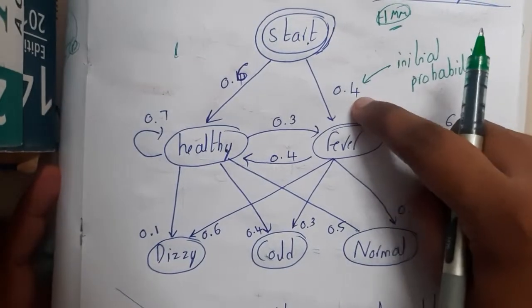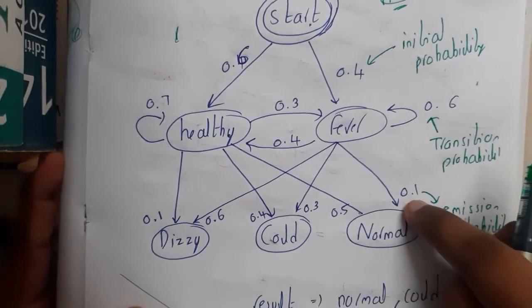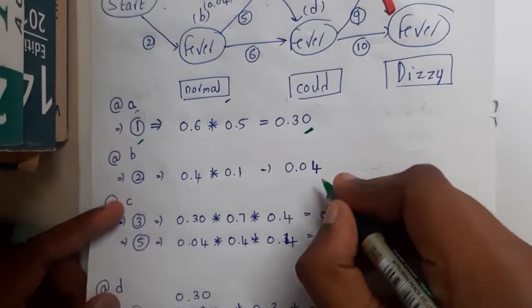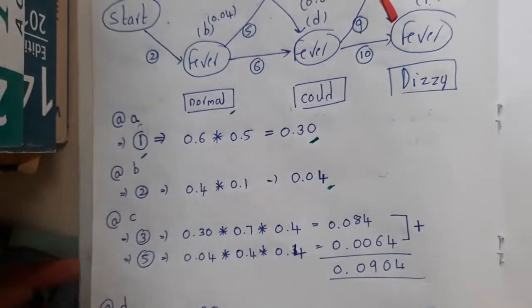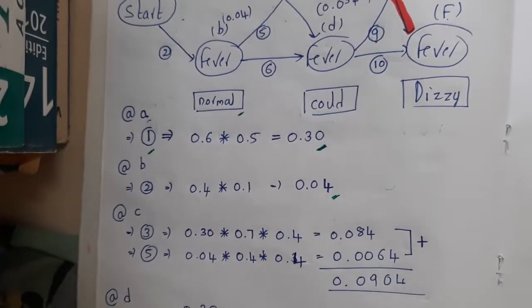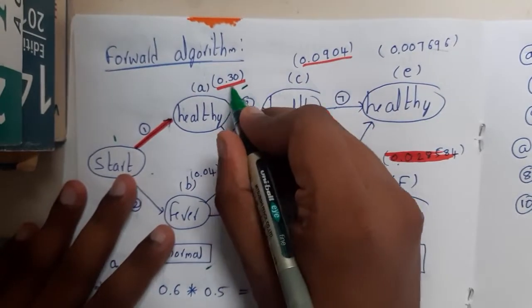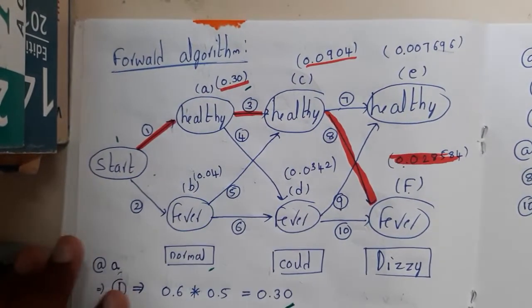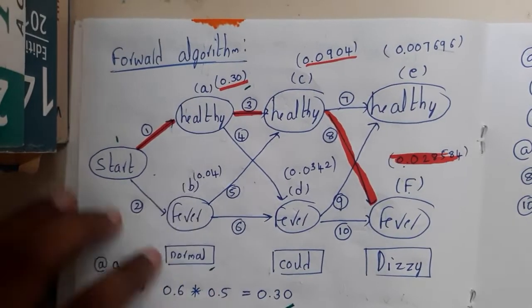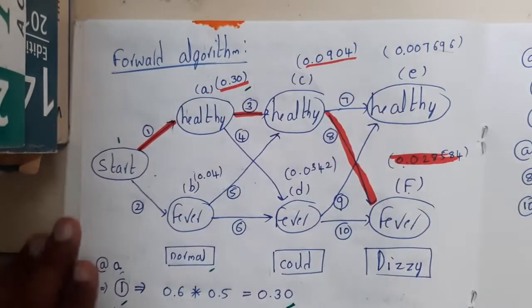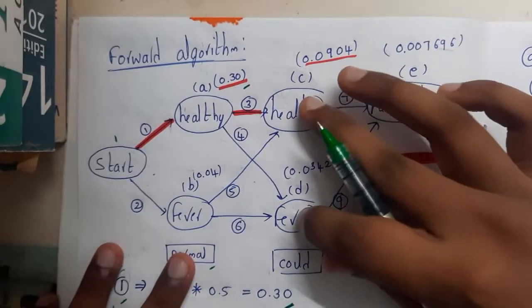Similarly, to reach node B via Fever: from Start to Fever is 0.4, and from Fever to Normal is 0.1, giving 0.4 × 0.1 = 0.04. Once you have the values at A (0.30) and B (0.04), write them down and underline the maximum among the two.